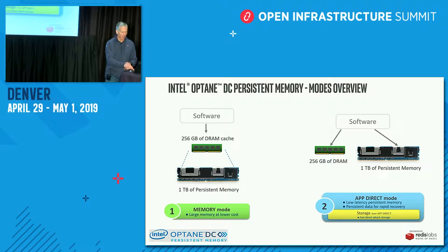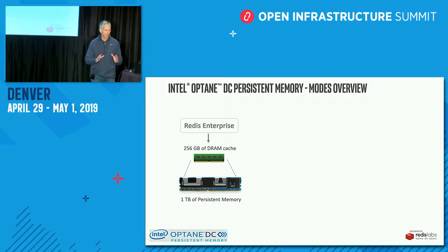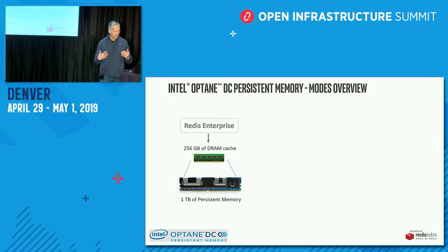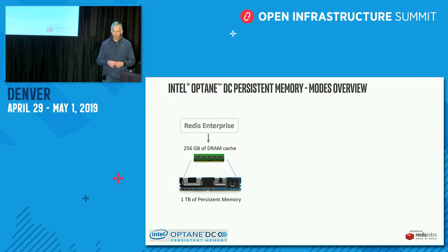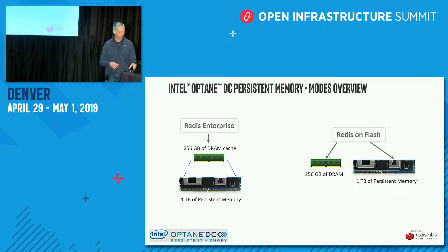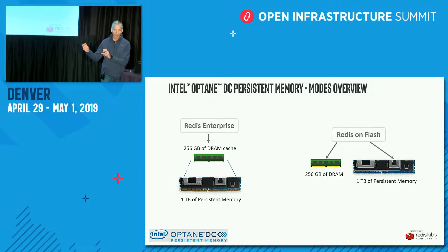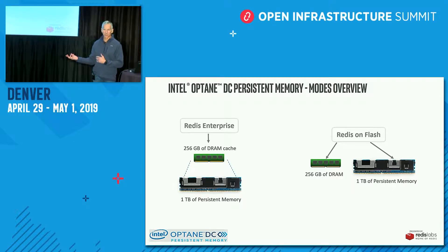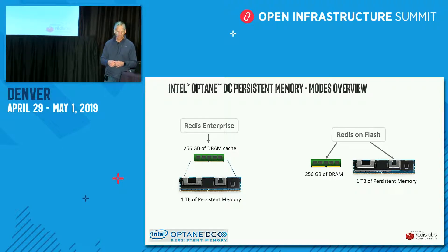What I'm going to show is from a memory standpoint — Memory Mode — how we're using this from a Redis standpoint and the benefit it provides. From a Redis Enterprise perspective, we're taking advantage of that caching layer and using the persistent memory as total capacity. There is another alternative in App Direct Mode: you can use Redis on Flash — instead of writing to SSD, you're actually writing to the Optane Persistent Memory on that DIMM.